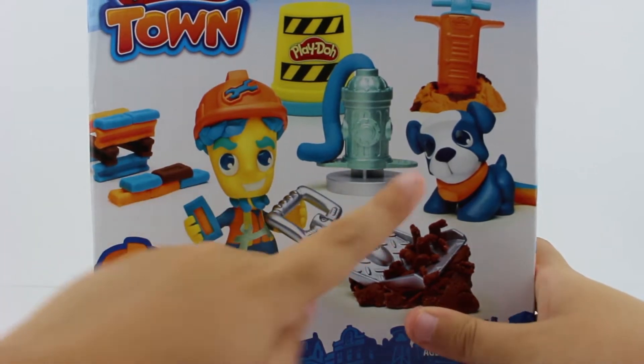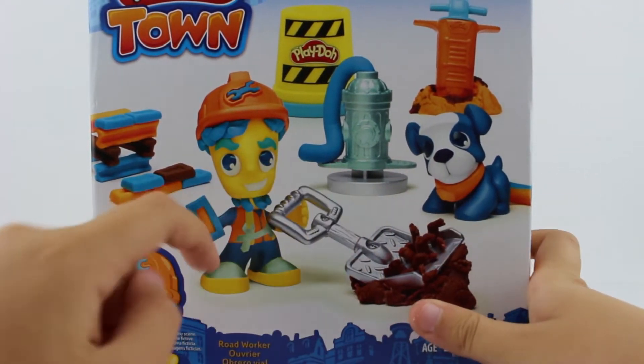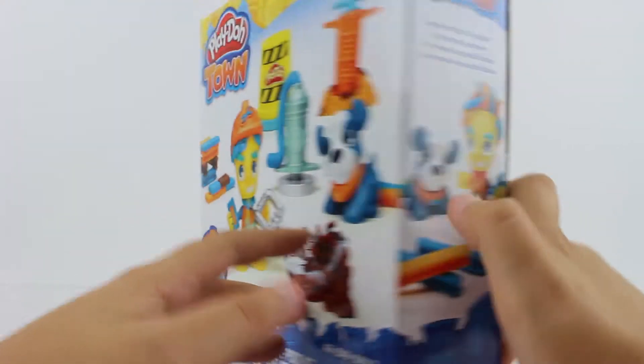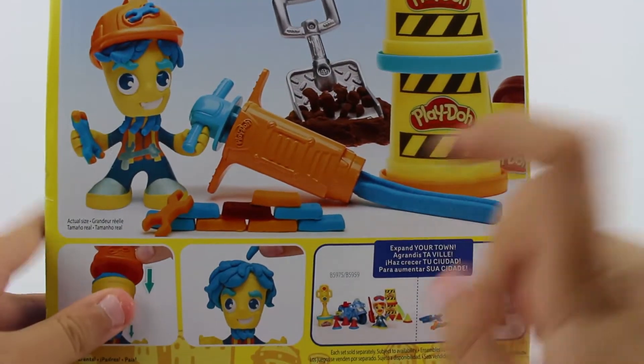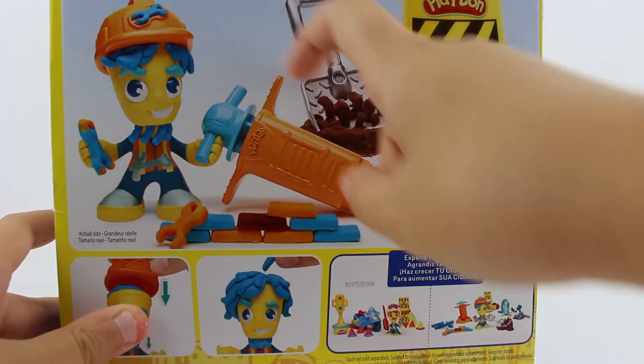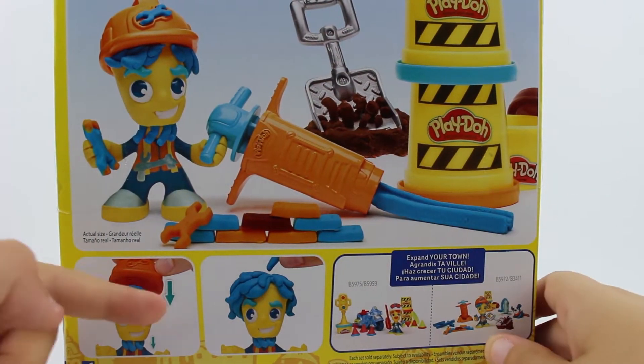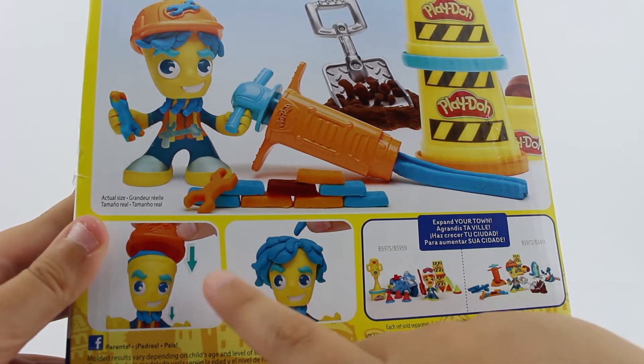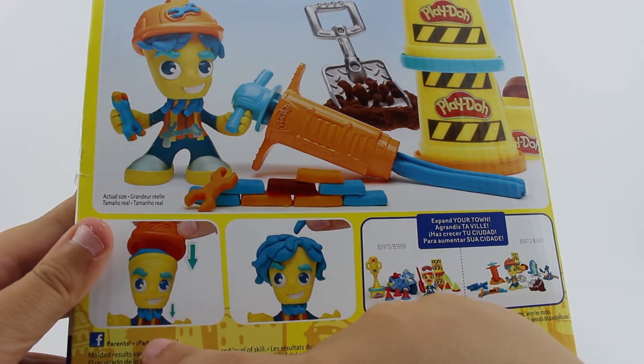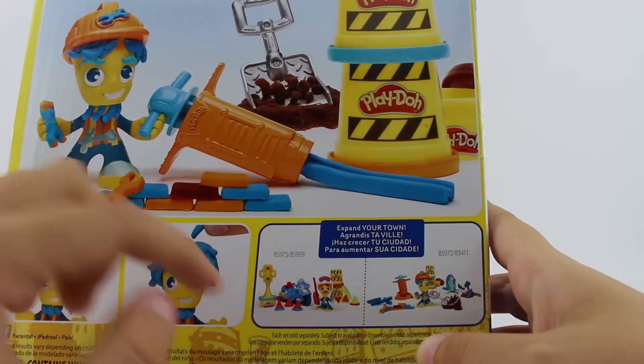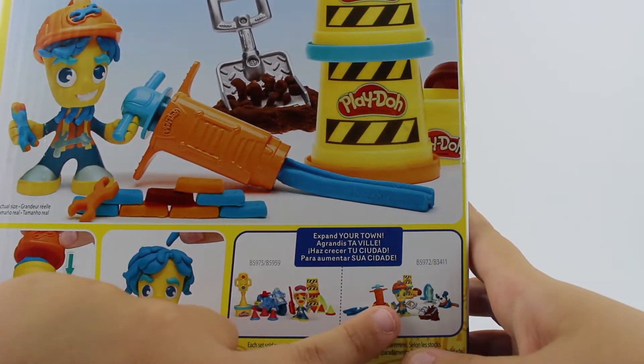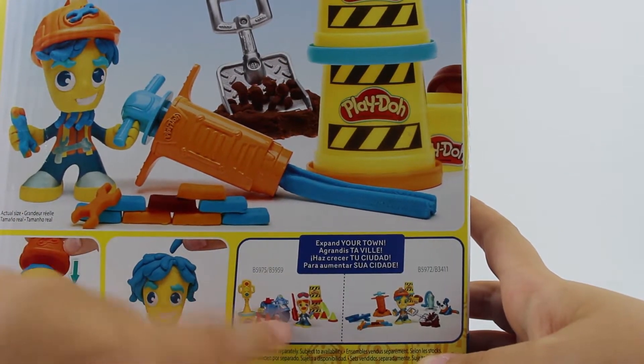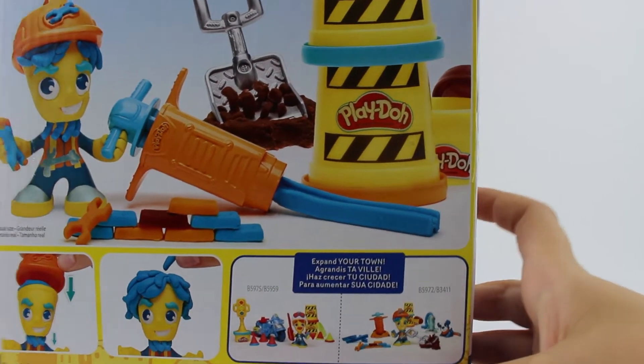You can make poop come out of the dog and make hair and a beard with the guy. And now this is the back. It shows you just what it brings and it tells you, like, you can place the hair. The hat pushes down the beard. Then this is the set that we have and this is another one that it has.